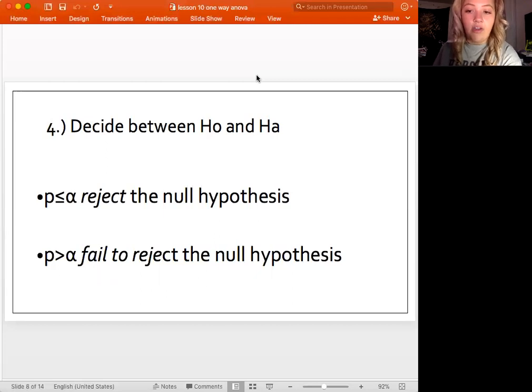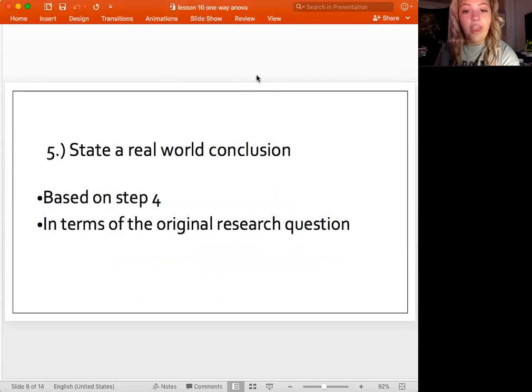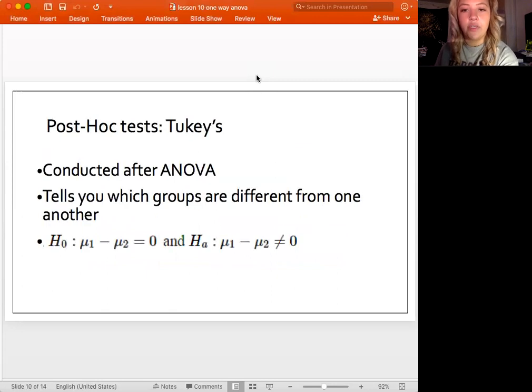And then same thing, I won't go too far into these. Hopefully you know these by now. You decide between your null and alternative based upon what your p-value is, so reject or fail to reject the null. And then go ahead and state the real world conclusion based upon the original research question. So with the information that you're talking about, where you're talking about people or cars or whatever the situation was.